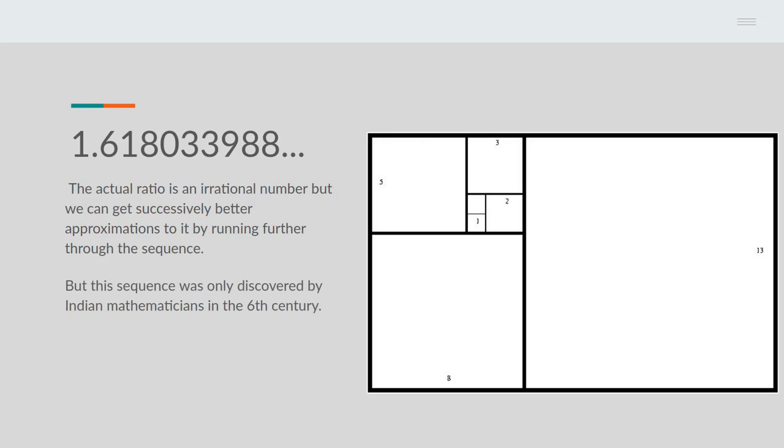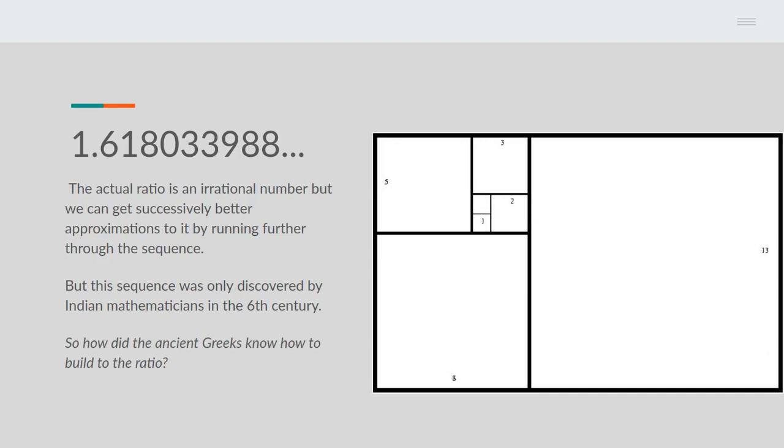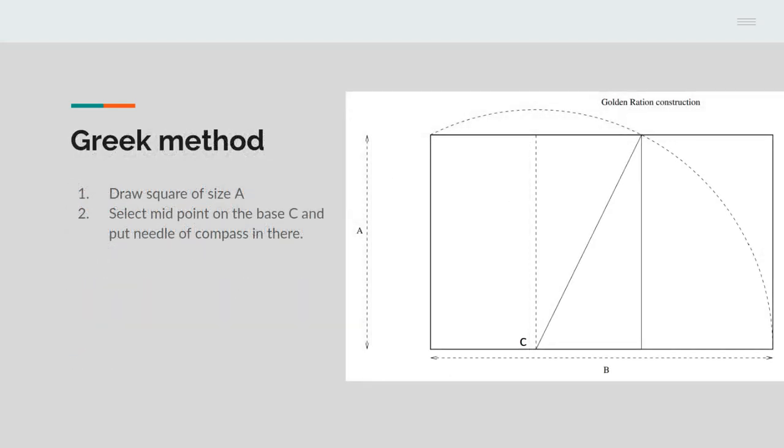But although we know it as the Fibonacci series, Fibonacci didn't make his name on that. He made his name as the guy who introduced Indian decimal arithmetic to Europe, the decimal number system we currently use. Prior to him, Indian mathematicians had discovered what we now call the Fibonacci series in the 6th century, and he may have obtained it from them. But this is still way after the ancient Greeks. So how did the ancient Greeks know how to build this ratio? Had they discovered the Fibonacci series? Maybe, but we have no record of it. They had a different way of doing it, a purely geometrical construct.